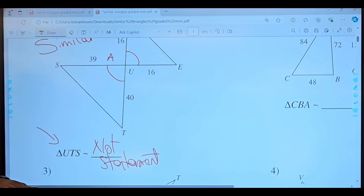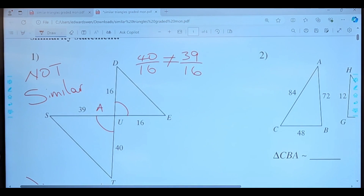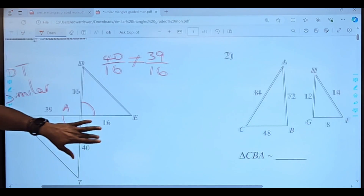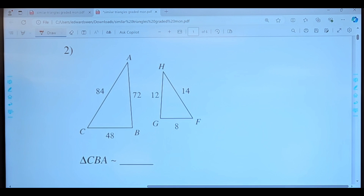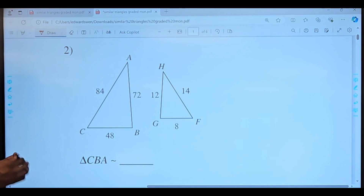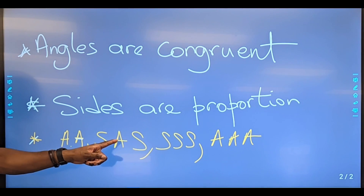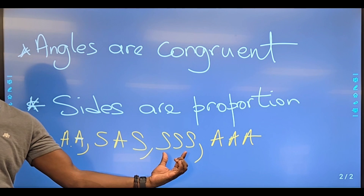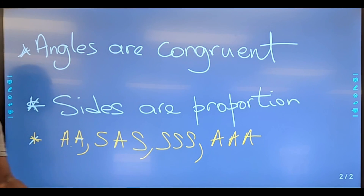We have no statement because we're supposed to write a similarity statement, but we don't have one because they are not similar. For number one, you're supposed to label it 'not similar.' Now when you take a look at number two, we're noticing there is no angle given. So it must be three sides — I got three sides, which means I'm going to be focused on the side-side-side statement.